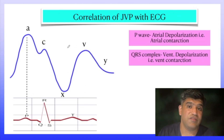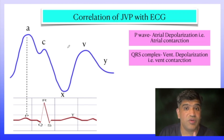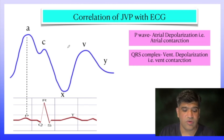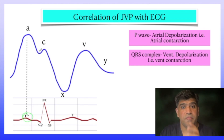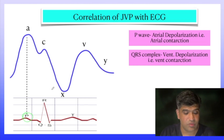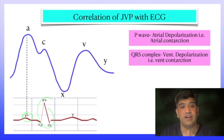Now the correlation of JVP with ECG. The P wave on ECG denotes atrial depolarization — that is atrial systole, atrial contraction — so the A wave corresponds with the P wave. After the tricuspid valve closes, right ventricular systole starts, so the QRS complex — ventricular depolarization, ventricular contraction — happens after the C wave.